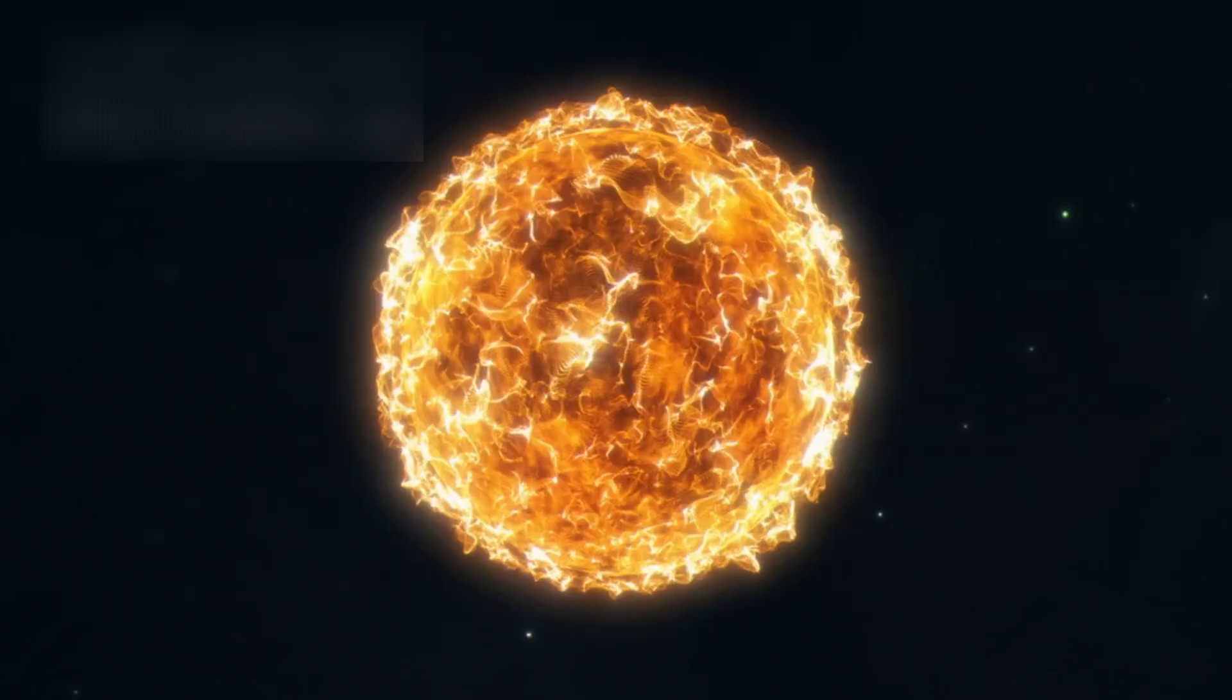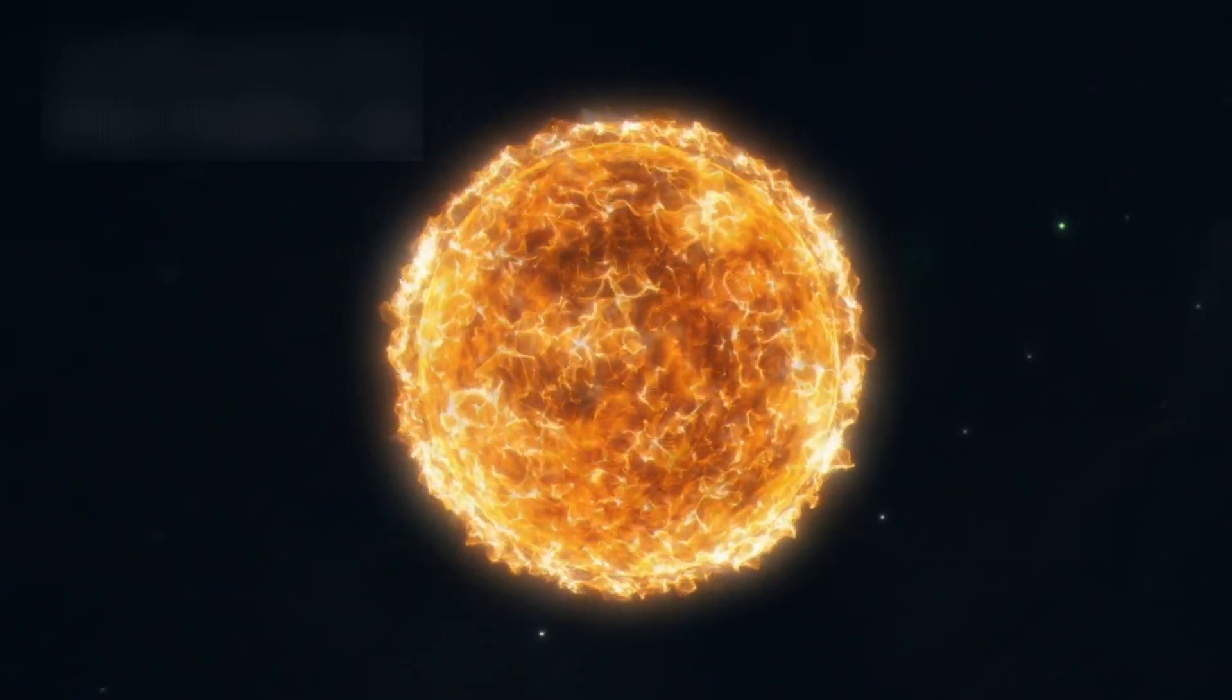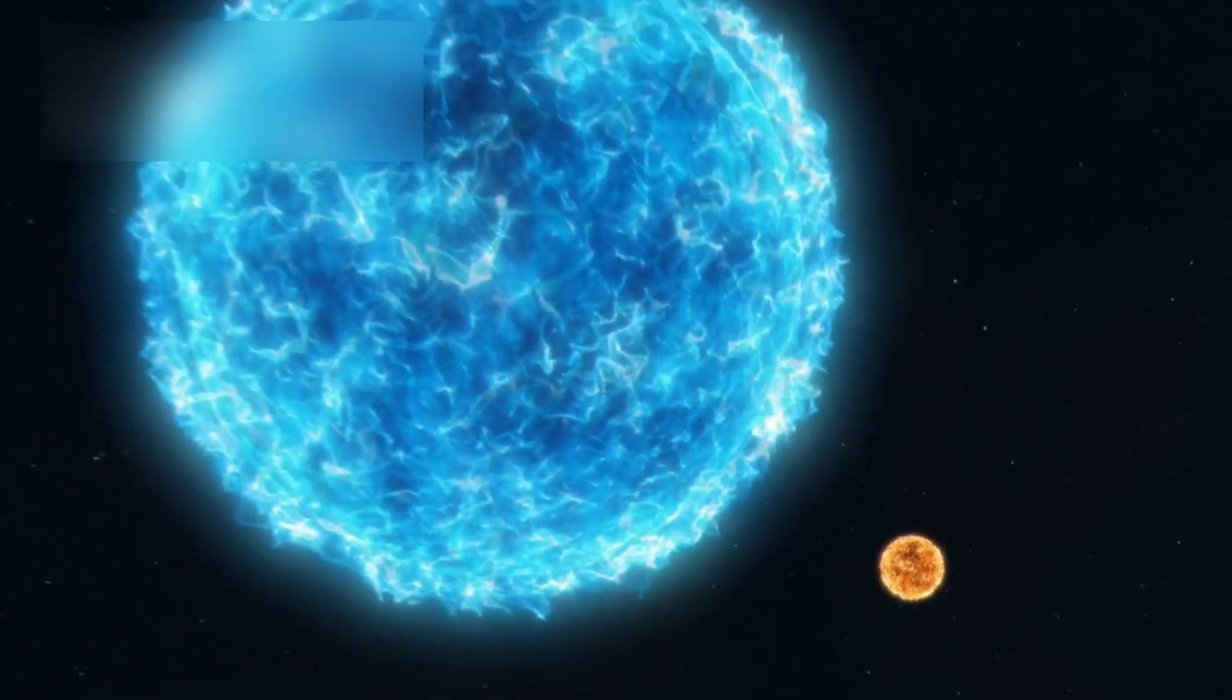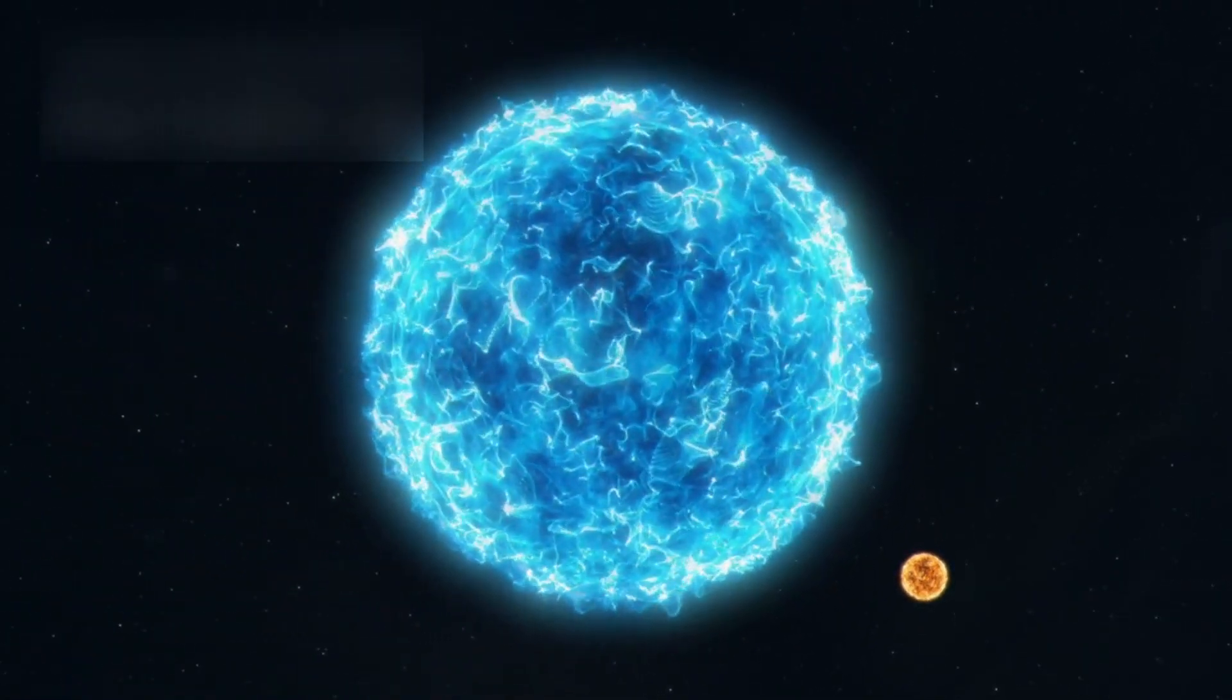The star that could one day shock the entire night sky is Betelgeuse. It sits on the shoulder of Orion the Hunter, glowing reddish-orange, instantly recognizable to anyone who gazes at the stars. Betelgeuse is a red supergiant, nearly 700 times the size of our sun, and only about 600 light-years away.